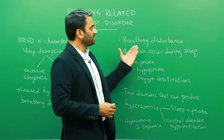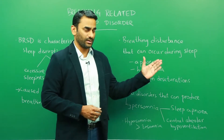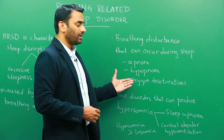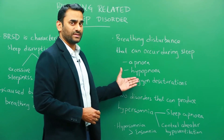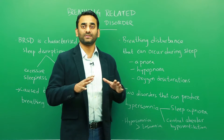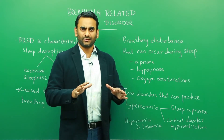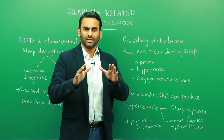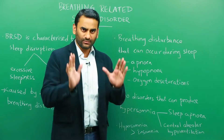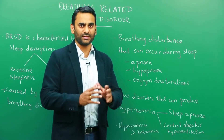The breathing disturbances that can occur during sleep are apnea, hypopnea, or oxygen desaturations. Hypopnea is the condition where the respiratory rate, which is normally between 16 to 20 per minute, falls down to drastic levels in some cases.